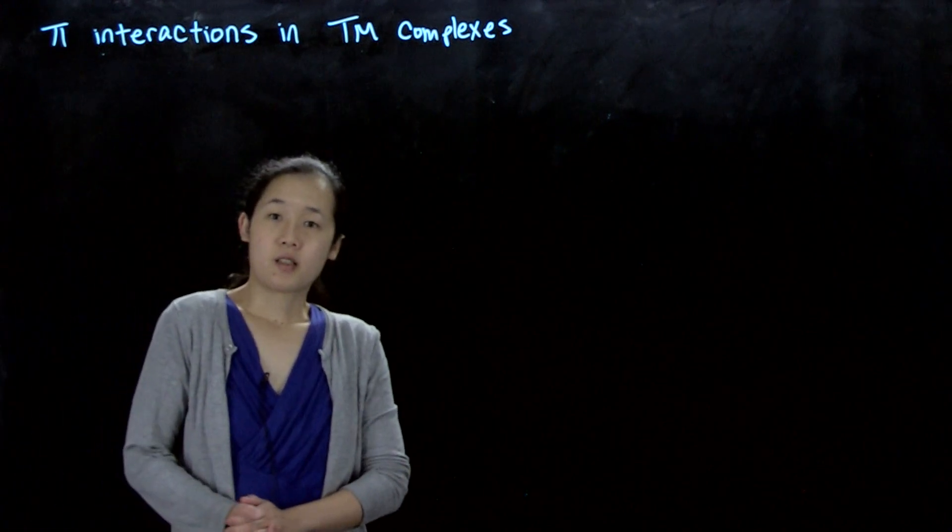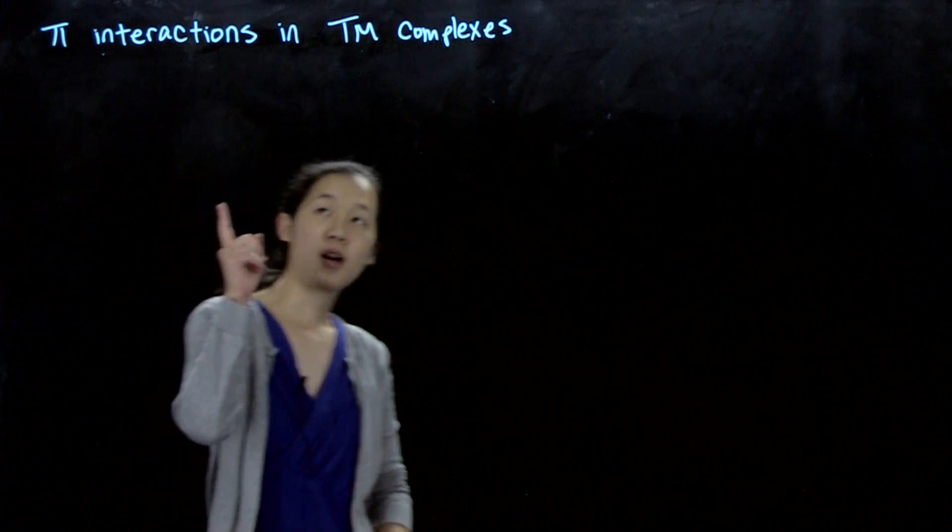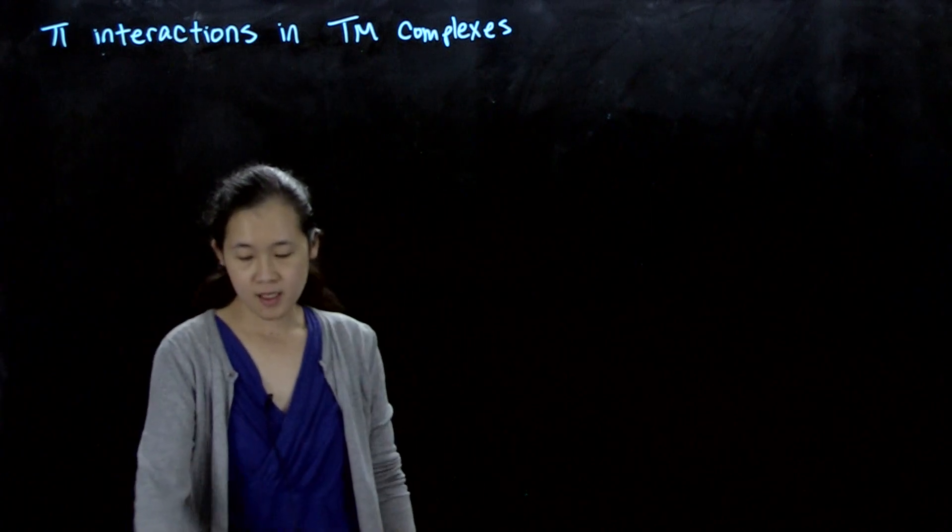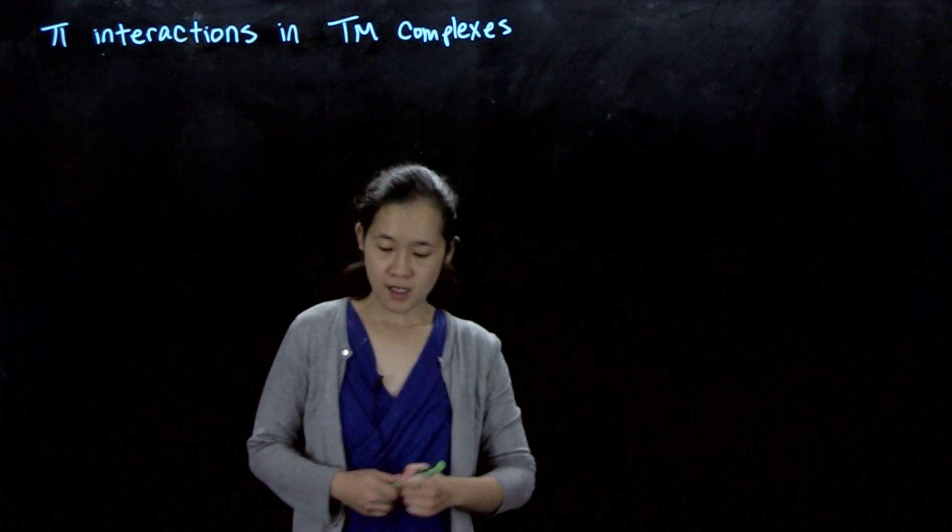So we've done sigma-only interactions in coordination complexes. Let's talk about pi interactions. The reason is because ligands can be different types.